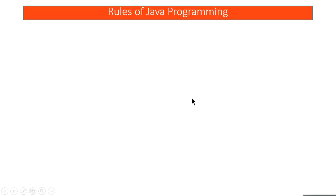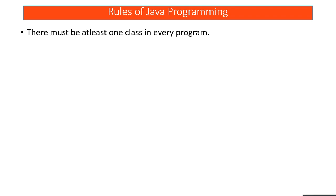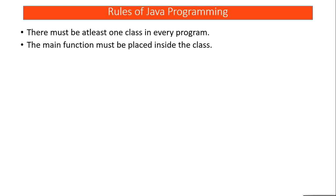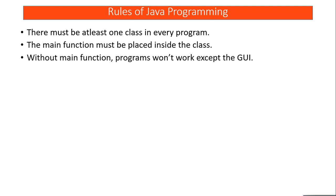Before starting to write a Java program, we must know some basic rules. If you are writing a program in Java language, you must have a class defined in it — without a class you cannot create a Java program. Inside that class you must have a main function; without a main function your program will not work, except for GUI programs like applets. Also, every statement must end with a semicolon, just like in English every sentence ends with a full stop.